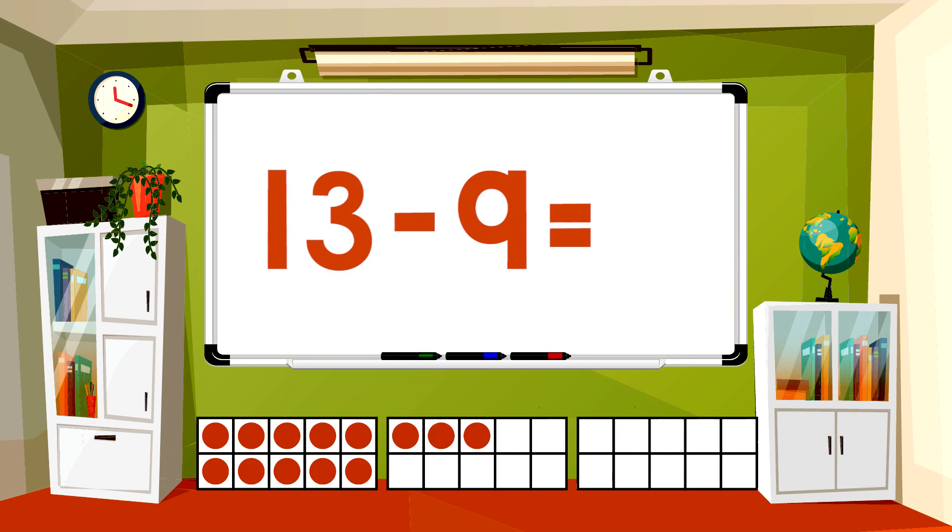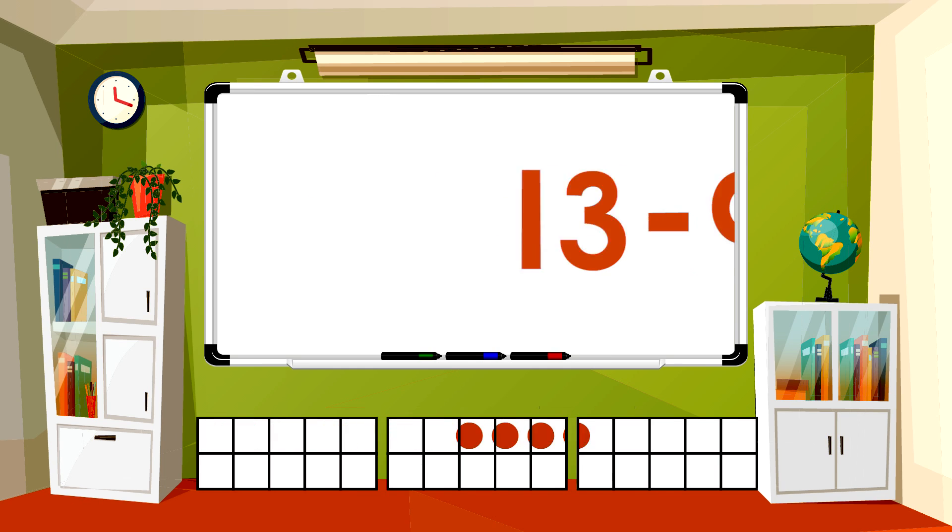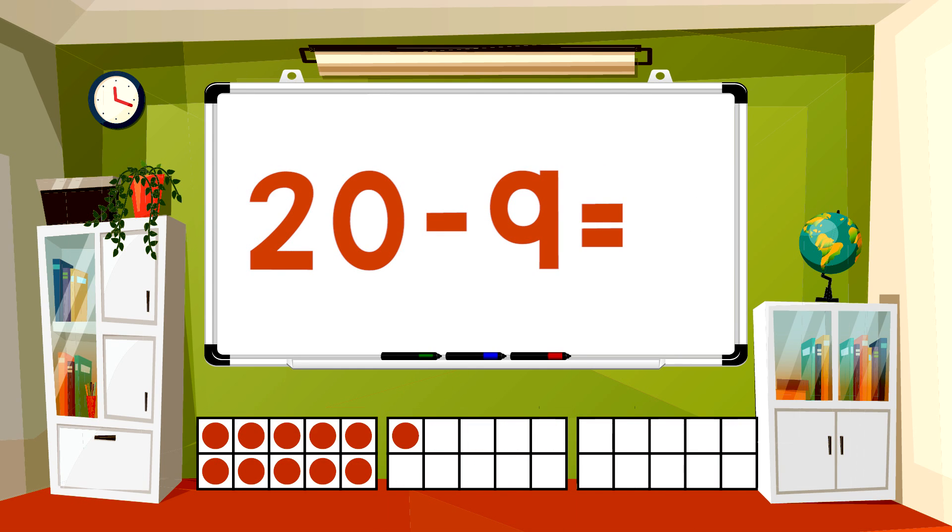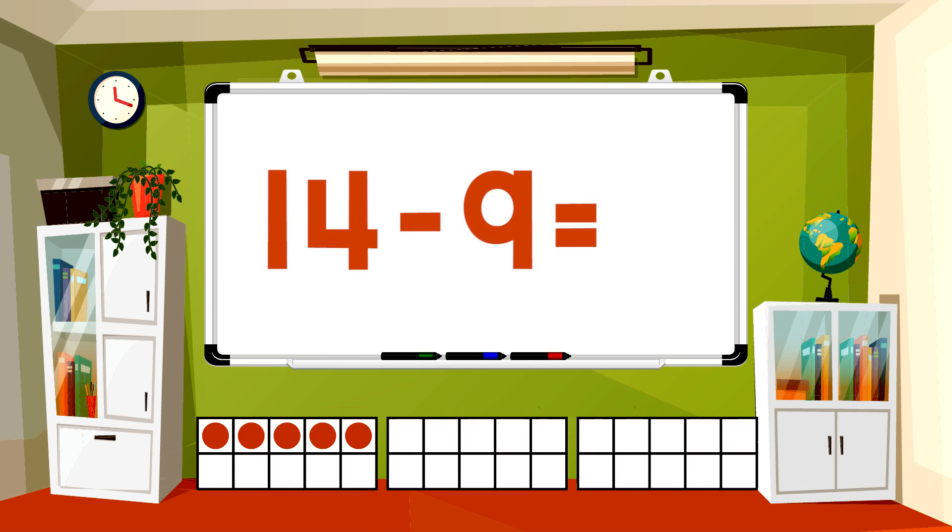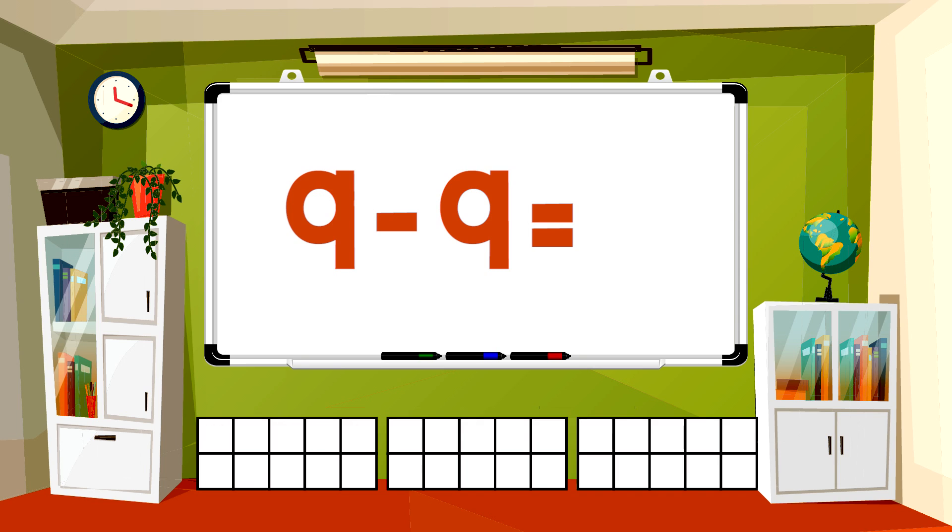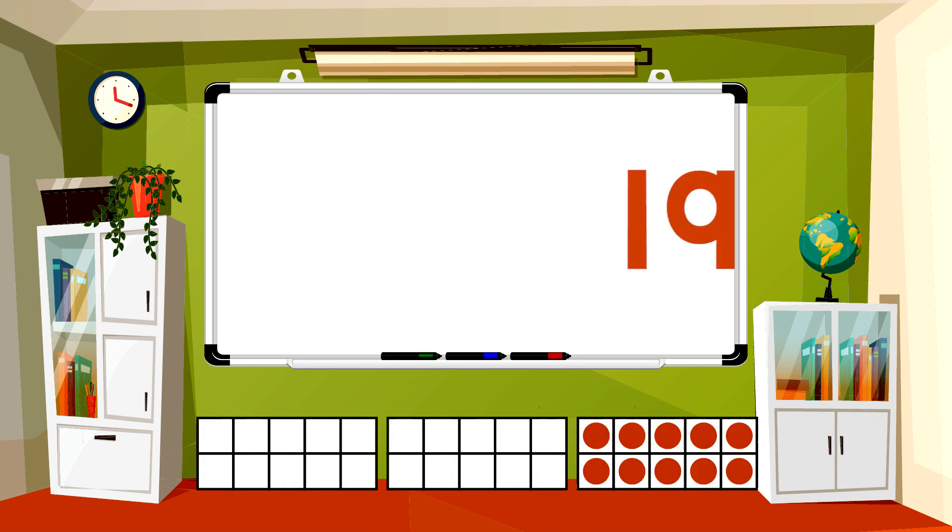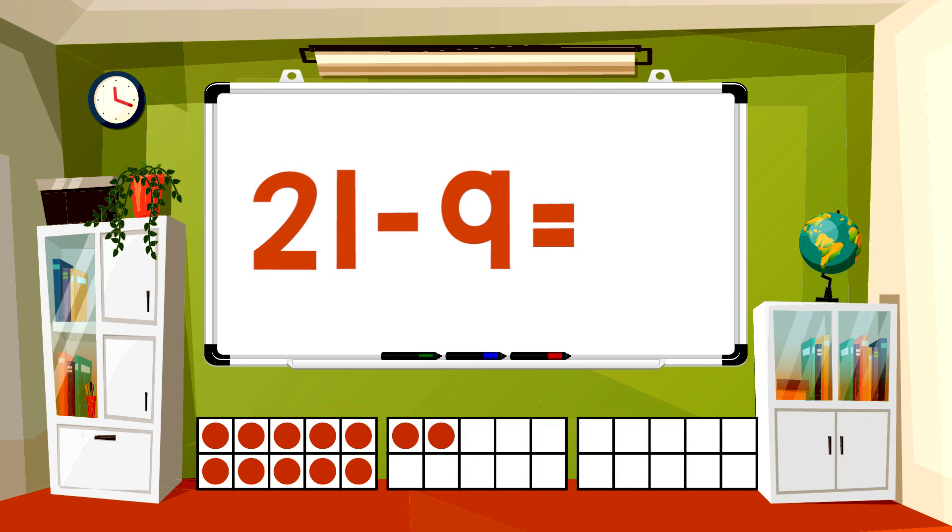3, 13-9 equals 4, 20-9 equals 11, 14-9 equals 5, 9-9 equals 0, 19-9 equals 10, 21-9 equals.